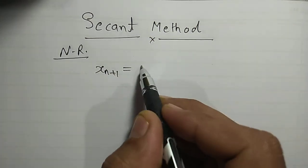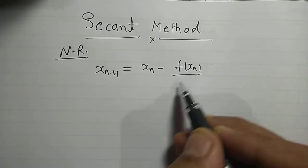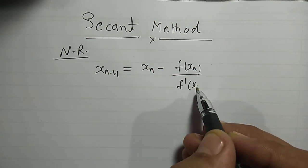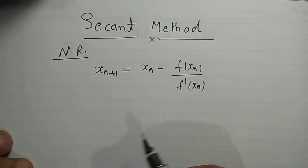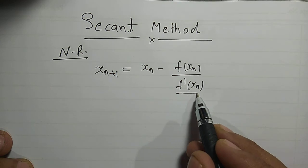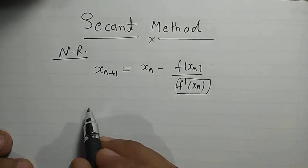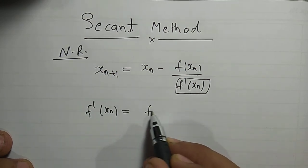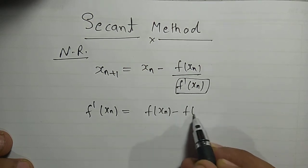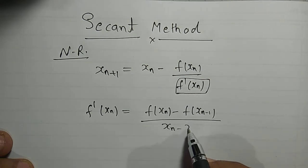The Newton-Raphson formula is: x_{n+1} = x_n − f(x_n) / f'(x_n). This is one iterative method. Now, in the Secant Method, we approximate the derivative f'(x_n) as: f'(x_n) ≈ [f(x_n) − f(x_{n−1})] / [x_n − x_{n−1}].